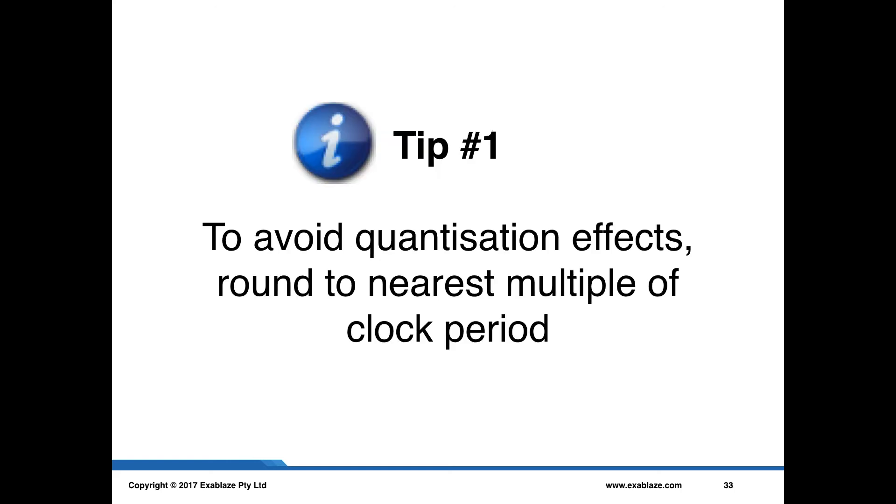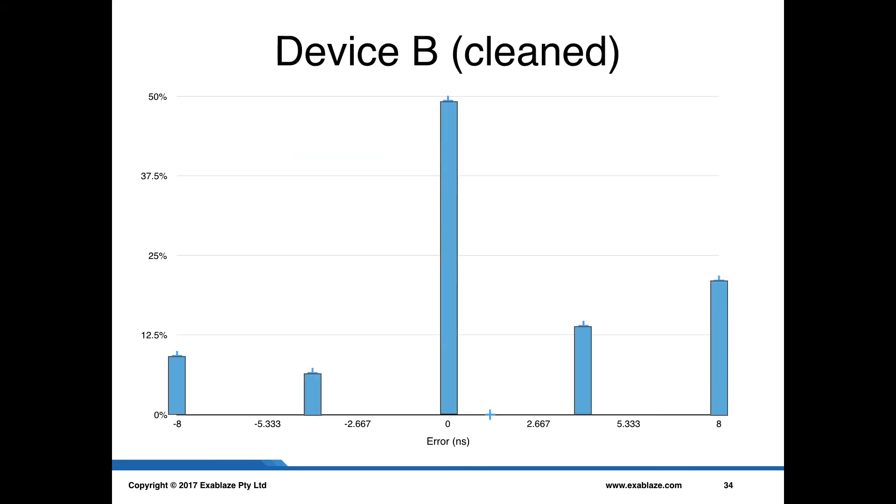So, the kind of summary of this is a tip, which is to avoid quantization errors when you do this sort of measurement, you really need to round to the nearest multiple of the clock period. Now, if I take device B and I clean it up, I get this sort of fairly sensible looking curve. You can see that there is a little bit of skew off to one side, and if we wanted to sort of try and summarize the data in here, we might want to try and take an average, and that average comes out at about 1.24 nanoseconds. That's sort of the average skew the device is reporting. Now, what I want to warn is to be a little bit careful with that sort of value.